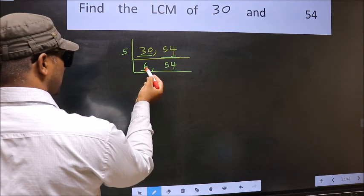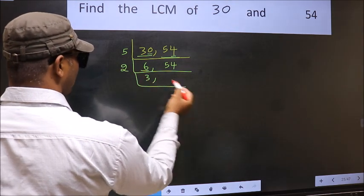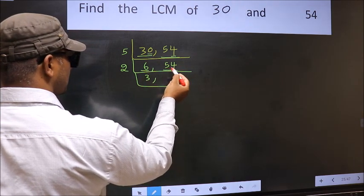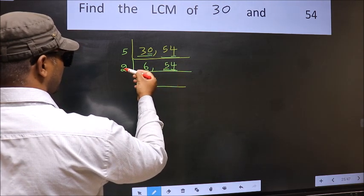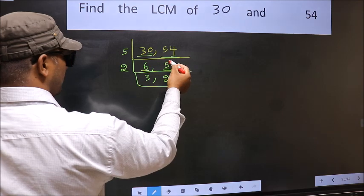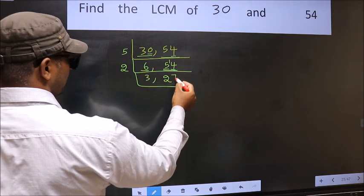Now here we have 6. 6 is 2, 3 is 6. The other number 54, last digit 4, even, so this is divisible by 2. First number 5, a number close to 5 in 2 table is 2, 2 is 4. 5 minus 4, 1, 1 carried forward 14. When do we get 14 in 2 table? 2, 7 is 14.